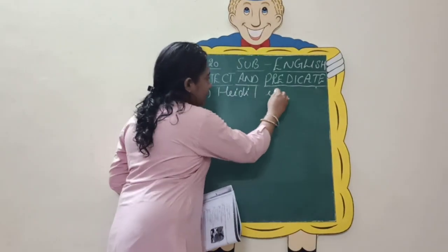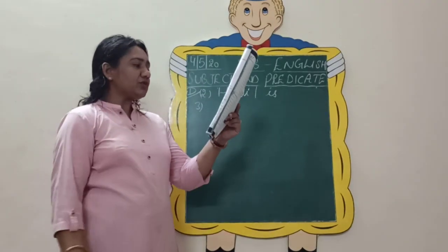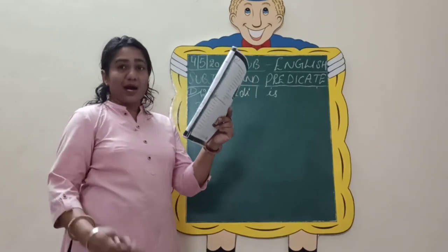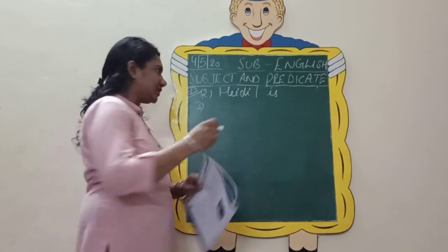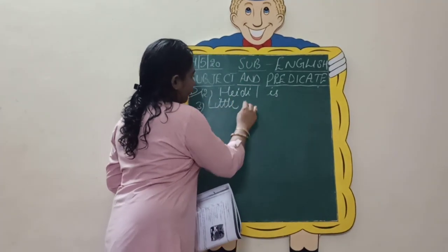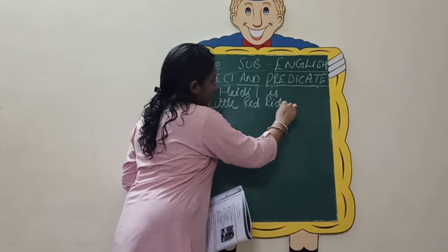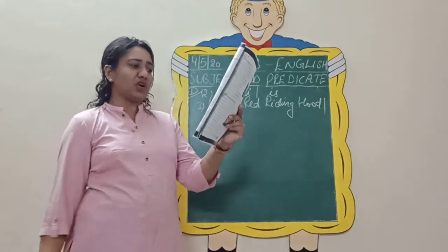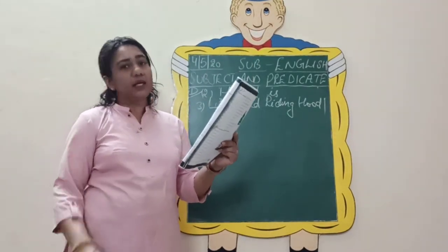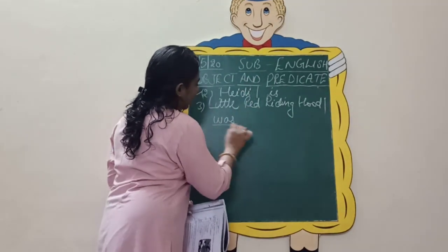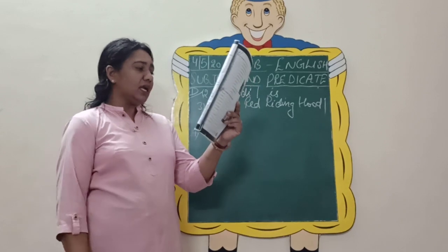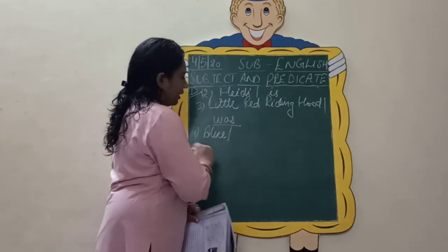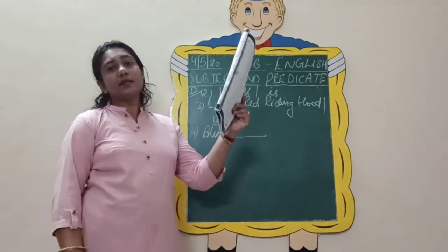Coming to the third sentence: 'Little Red Riding Hood was not afraid of the big bad wolf.' Ask yourself — who was not afraid? Little Red Riding Hood. Draw a line to separate the subject from the predicate, and the verb here is the helping verb 'was.' For 'Alice got lost in the forest' — who? Alice is your subject. Draw a line to separate the predicate, and the verb is 'got lost.'